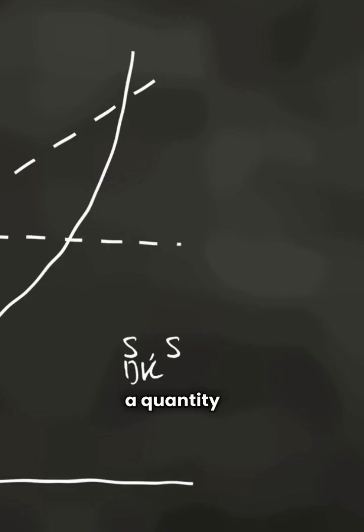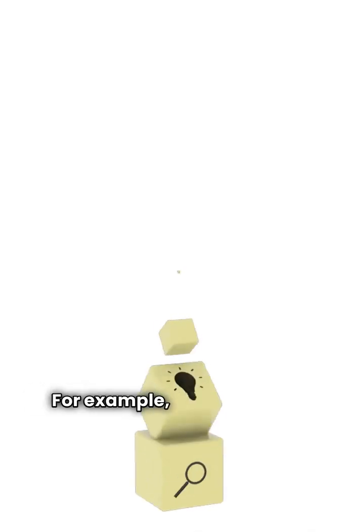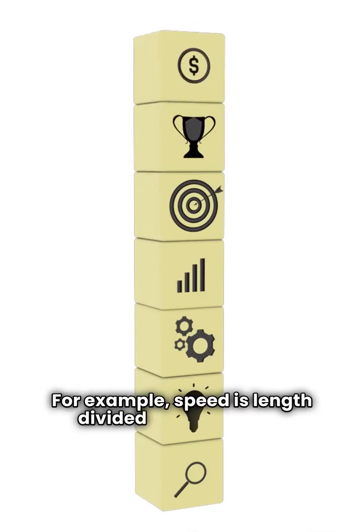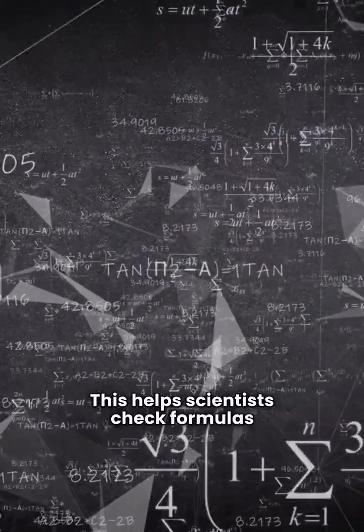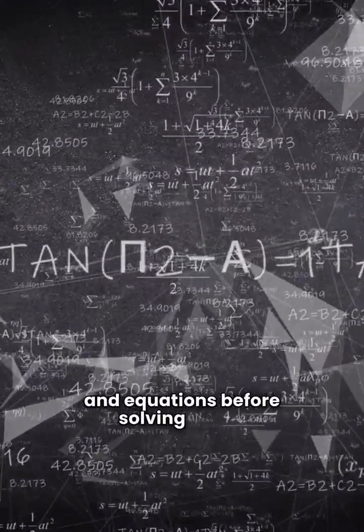Then there are dimensions. They show what a quantity is fundamentally made of. For example, speed is length divided by time, LT1. This helps scientists check formulas and equations before solving them.